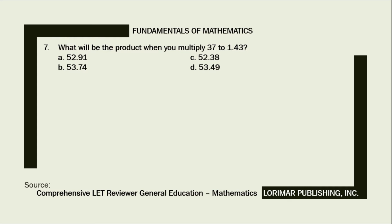What will be the product when you multiply 37 by 1.43? A. 52.91, B. 53.74, C. 52.38, D. 53.49. For this problem, I will give you 10 seconds to find the answer. Please don't forget to type your answer below in the comment section. Your 10 seconds starts now.